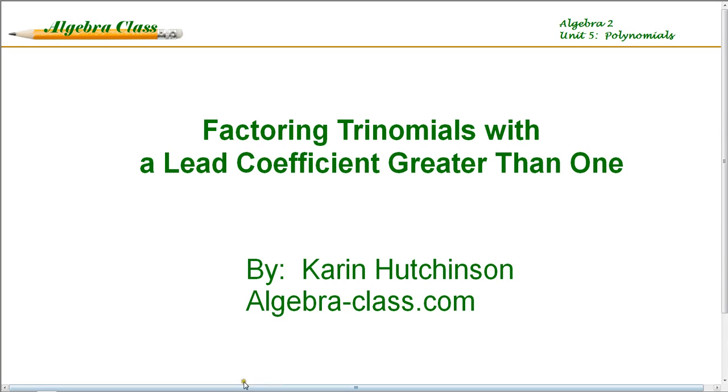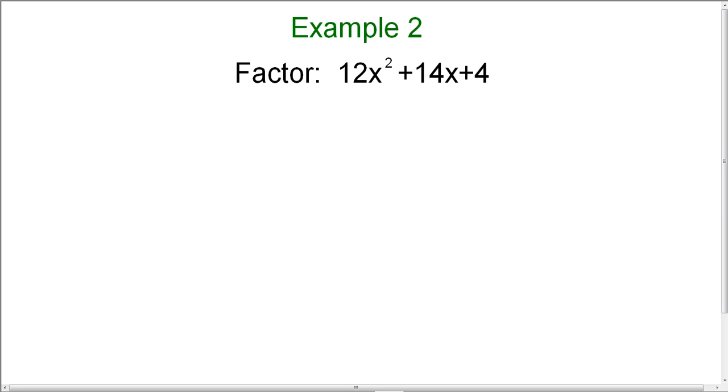This is example number two for factoring trinomials with a lead coefficient greater than one. We're going to factor the trinomial 12x² + 14x + 4.